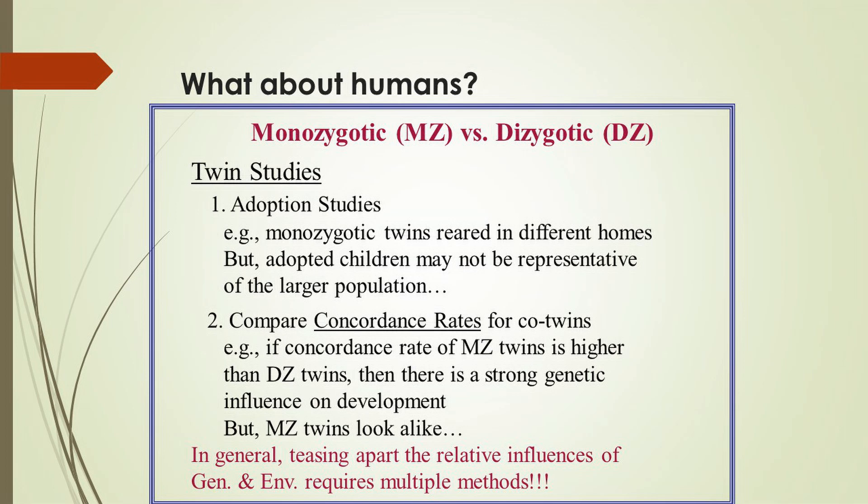Before we start talking about procedures in twin studies, I need to make sure that you have a full understanding of twins. There are two types of twins: identical twins and fraternal twins. Identical twins are referred to as monozygotic. Mono means one, and so these twins come from a single zygote or fertilized egg, so they share 100% of the same genetic material. They're identical.